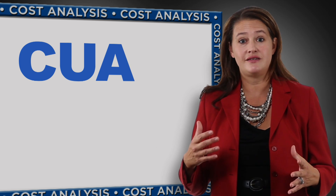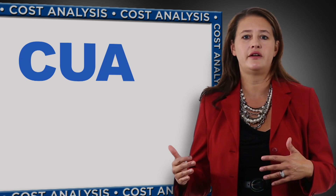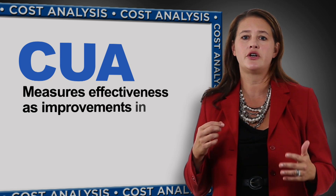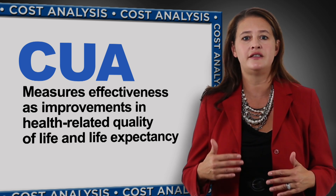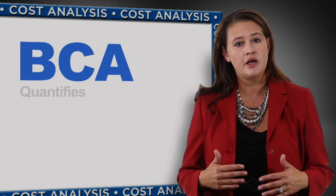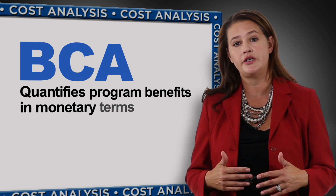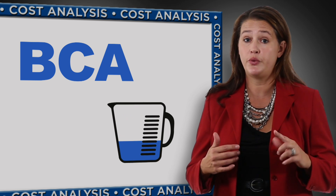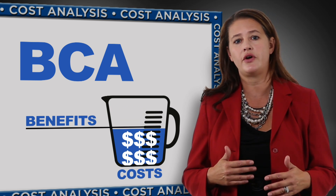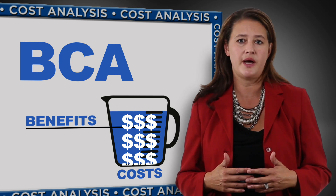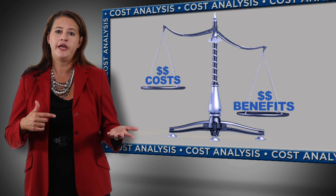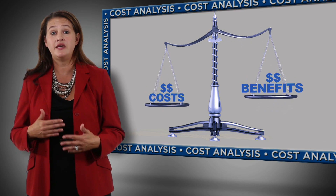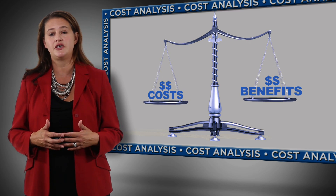There's also cost-utility analysis, a sub-variant of cost-effectiveness analysis, which compares programs on their costs but measures effectiveness in terms of improvements in health-related quality of life and survival or life expectancy. Benefit-cost analysis quantifies program benefits in monetary terms and assesses whether those benefits exceed the program cost. In Mike's in-home example, this would mean comparing the cost of the program to the monetized benefits of keeping a child in their home versus the costs and monetized benefits of placing a child in foster care.